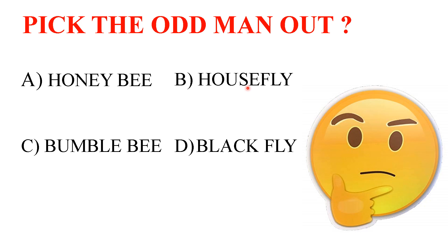They answered me. First, they said option A is right — honeybee. I asked the reason. They said honeybee is a beneficial insect and the others are not beneficial insects, so honeybee is the answer. But the answer is not honeybee, because if you see option C — bumblebee — bumblebee is also a beneficial insect. It helps in pollination.